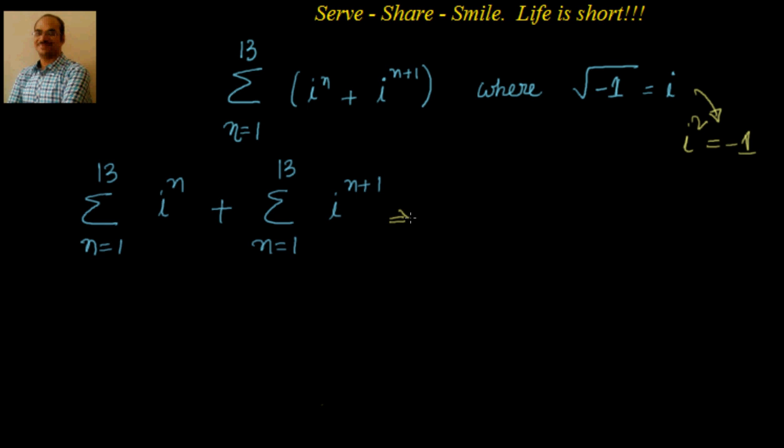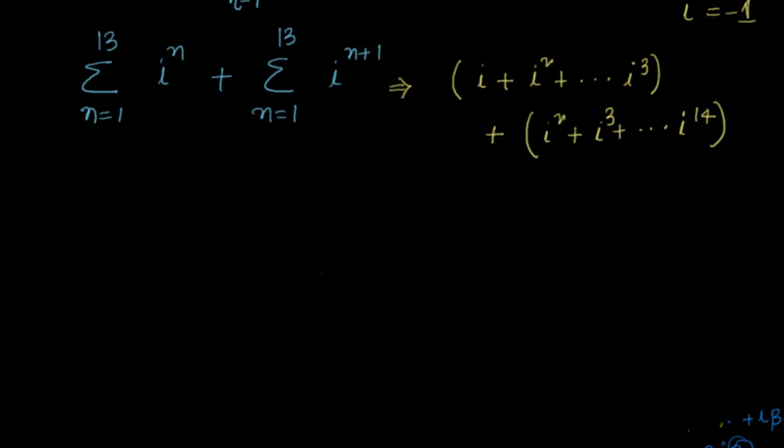So this will be nothing but equal to, as I understand, if I put n = 1 it is i, then afterwards if n = 2 it is i². So it will continue till i³. For that I have to add i^(n+1). 1 + 1 is 2, so this starts with i² and next i³ like that, and it will end with i^14. So this is what actually I have to find out.